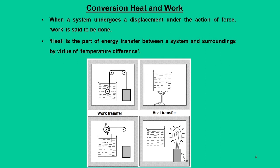From the first law, work and heat can be related together by the equation dQ = dU + dW, where work transfer and heat transfer are equal when these processes take place in a cycle. At that point the internal energy change is equal to zero. So for a cycle we write dQ = dU + dW, where dQ is heat interactions, dW is work interactions, and dU is the internal property of the system.